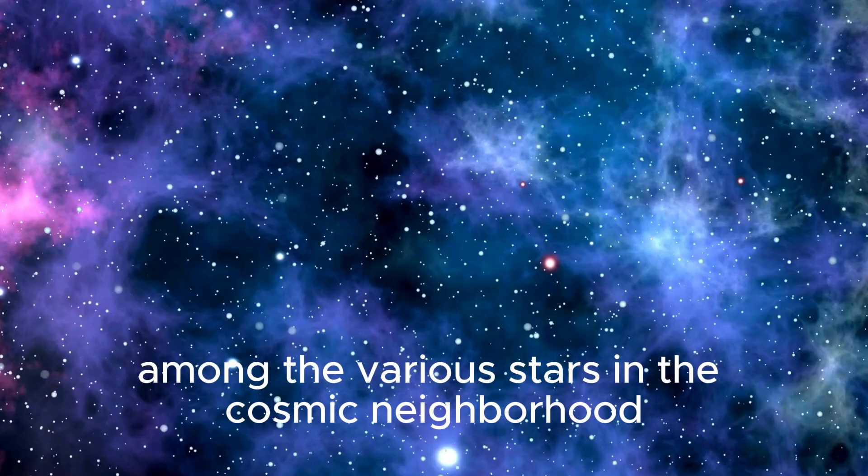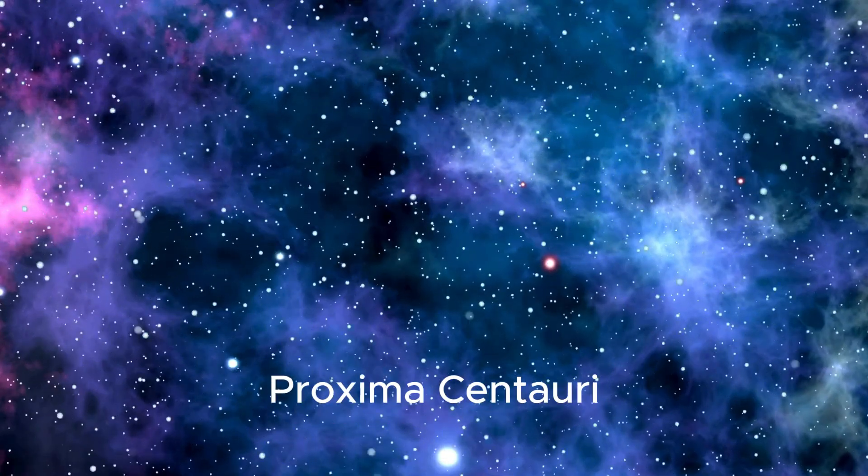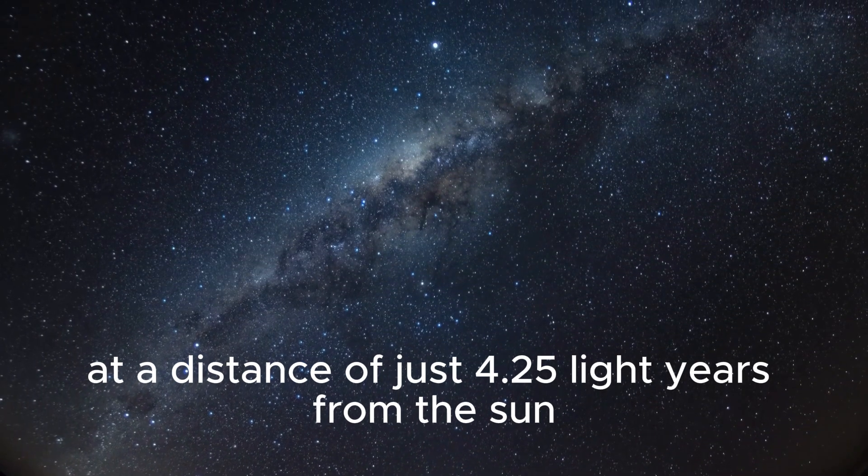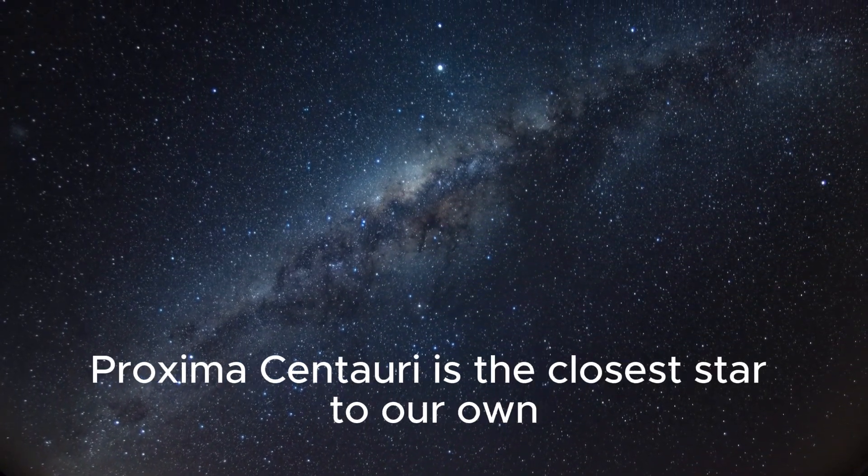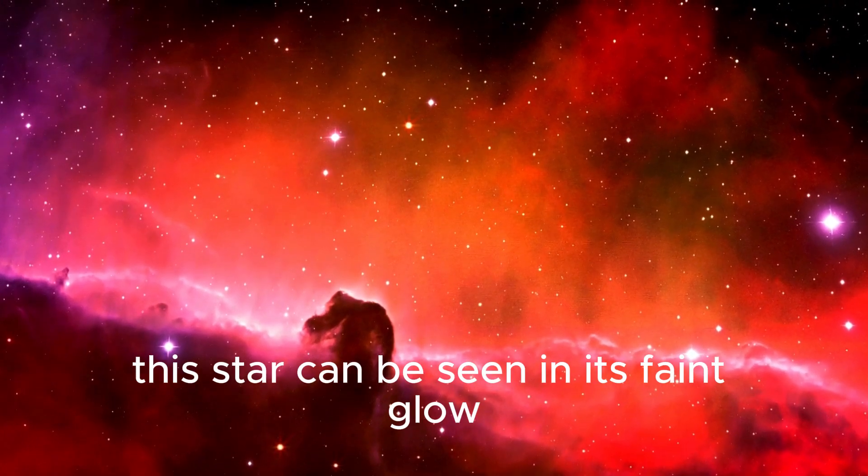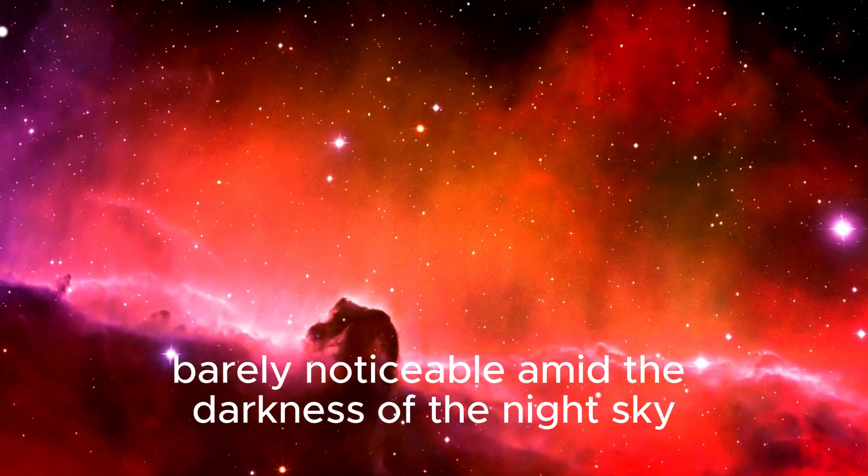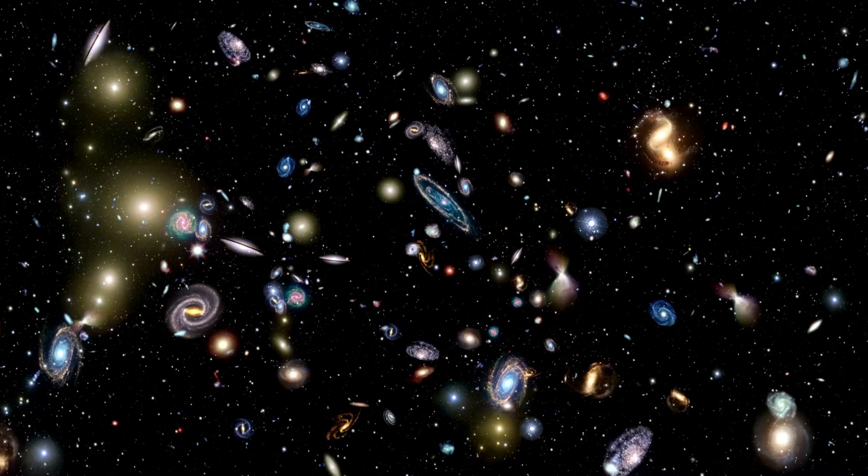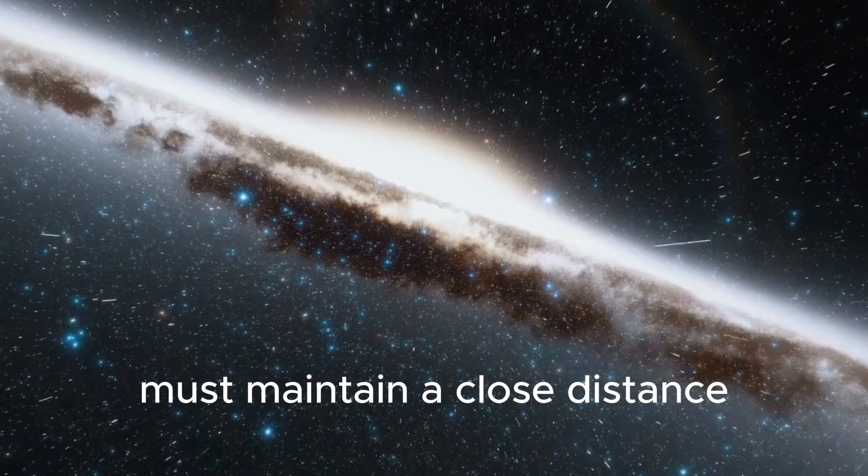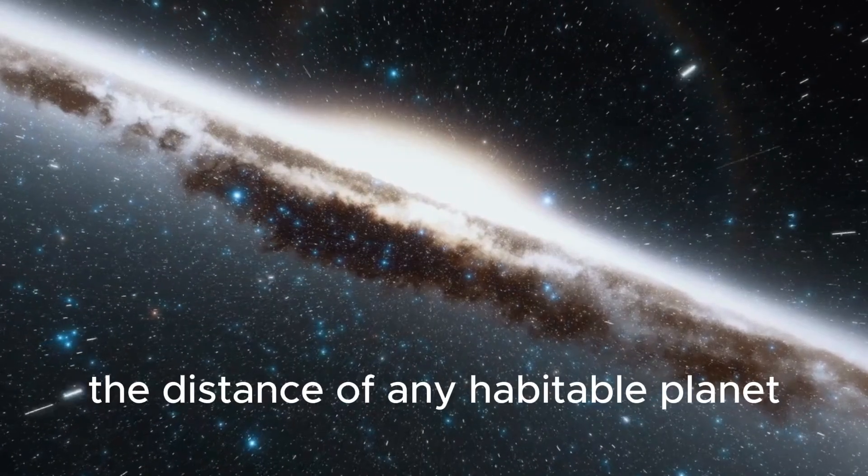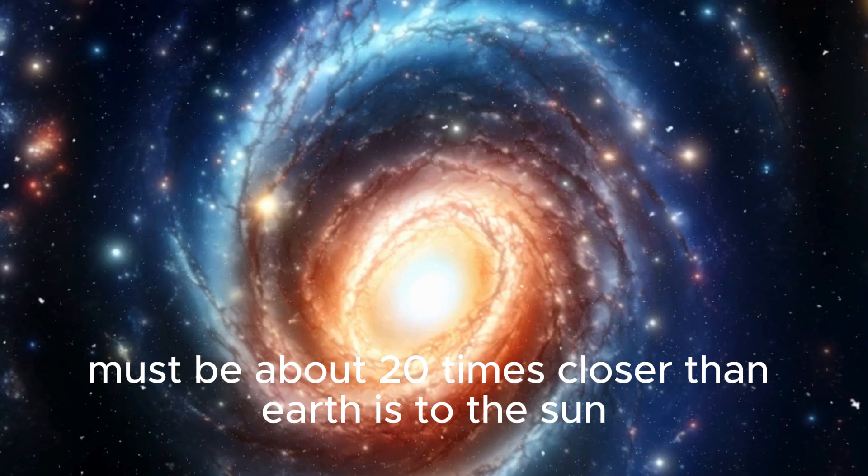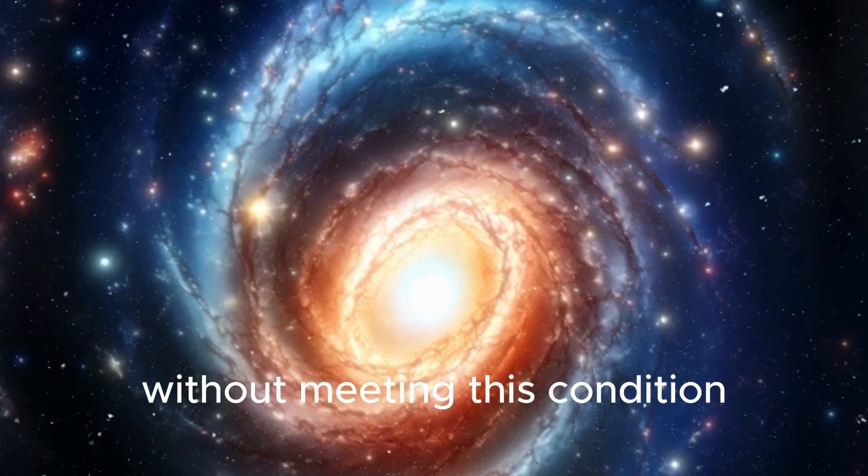Among the various stars in the cosmic neighborhood, Proxima Centauri rises as a reference point for potential life. At a distance of just 4.25 light-years from the sun, Proxima Centauri is the closest star to our own. This star can be seen in its faint glow, barely noticeable amid the darkness of the night sky. However, its weak radiance means that any habitable planet orbiting it must maintain a close distance. The distance of any habitable planet to Proxima Centauri must be about 20 times closer than Earth is to the sun. Without meeting this condition, none of its planets can support life-sustaining conditions like our planet.